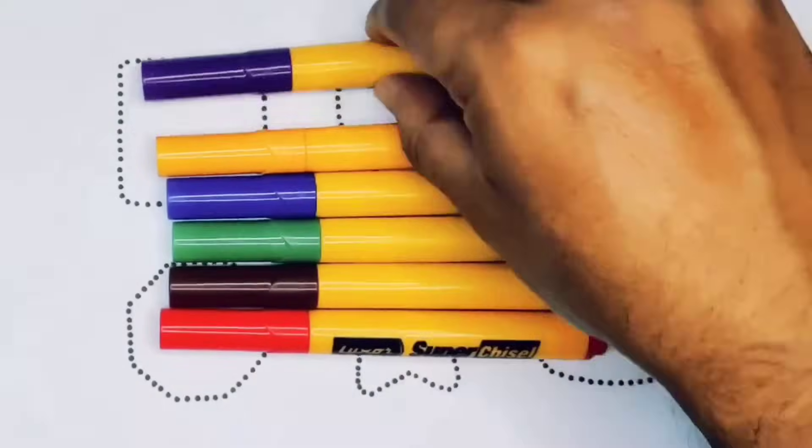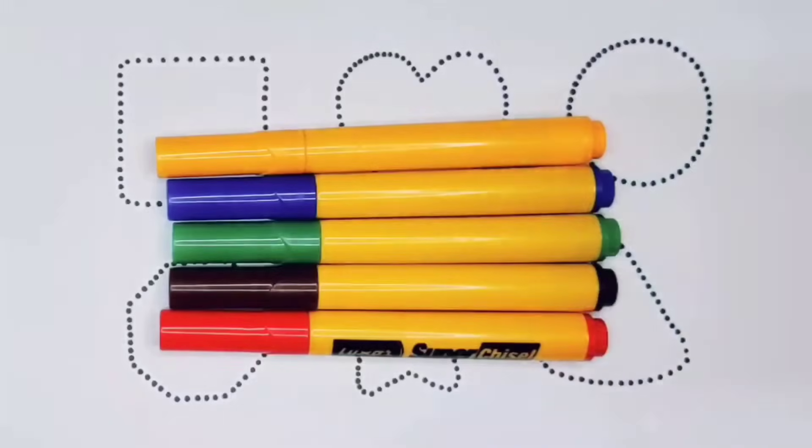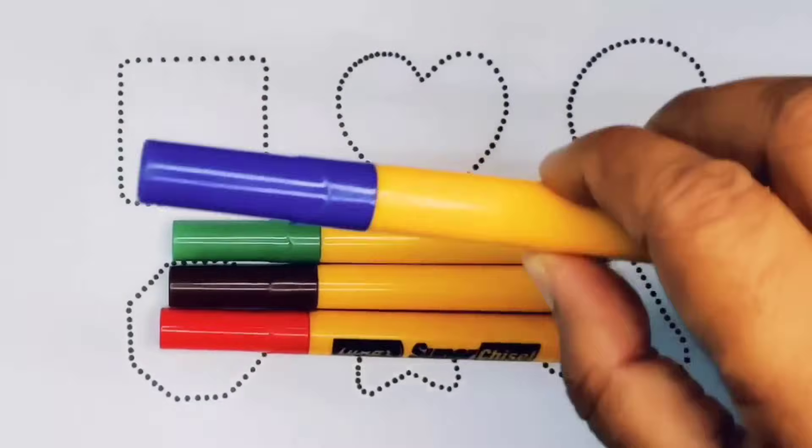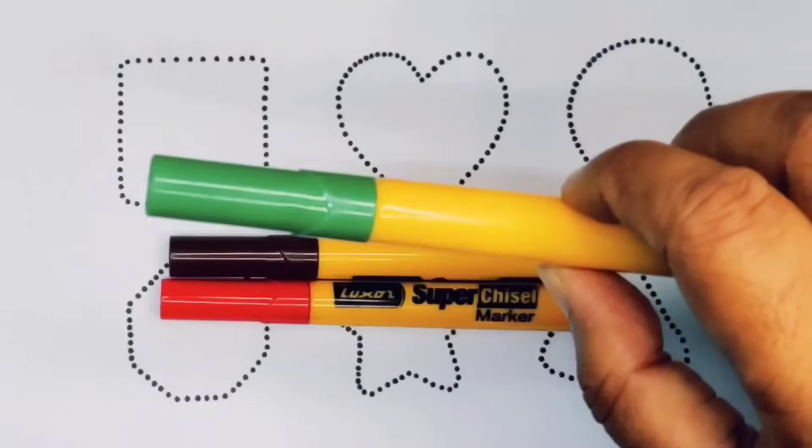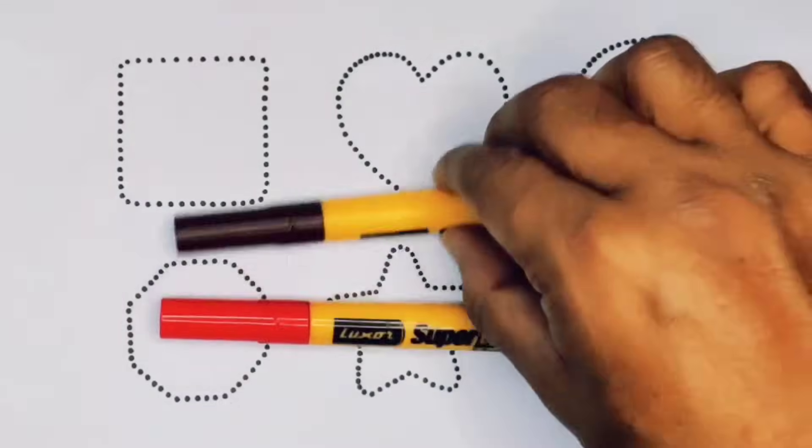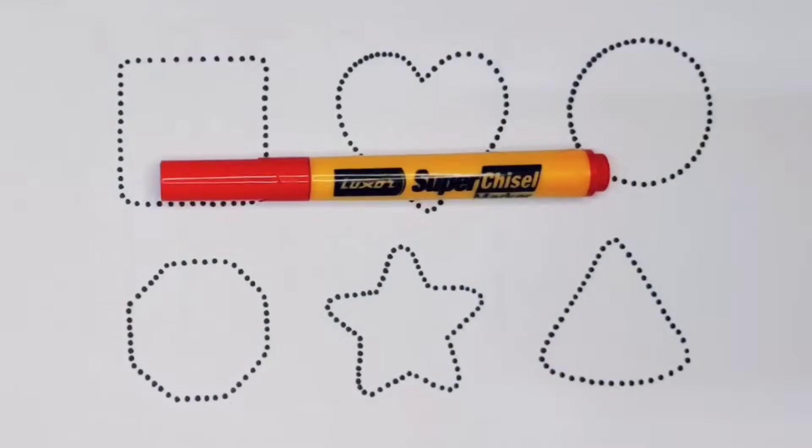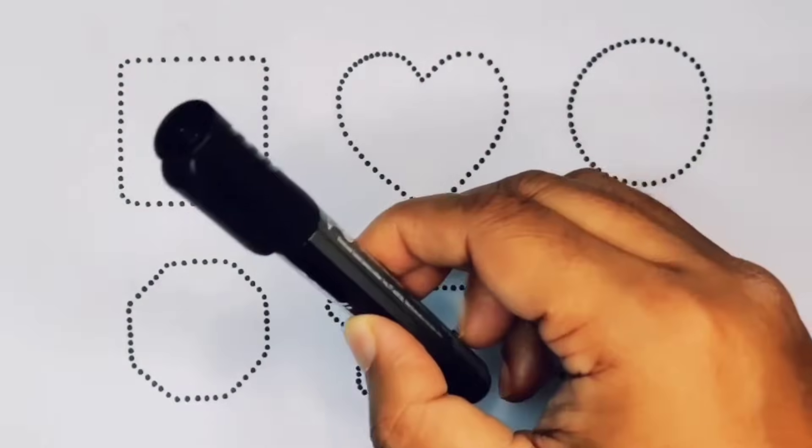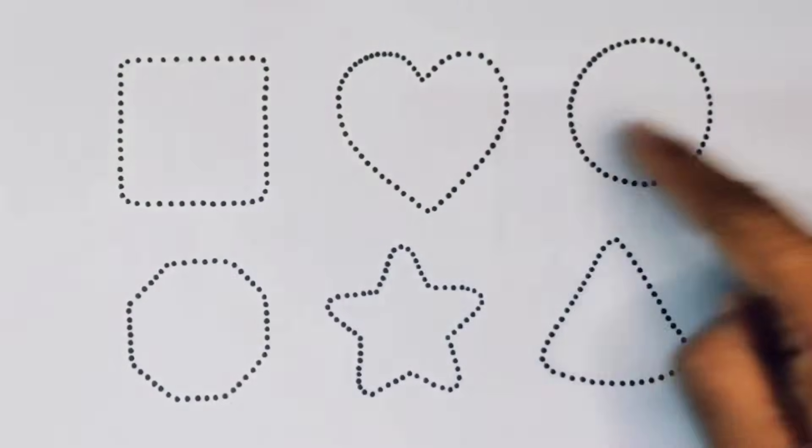Purple color, Orange color, Blue color, Green color, Chocolate color, Red color, and Black color. Now let's learn the 2D shapes.